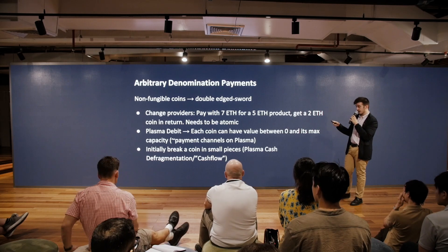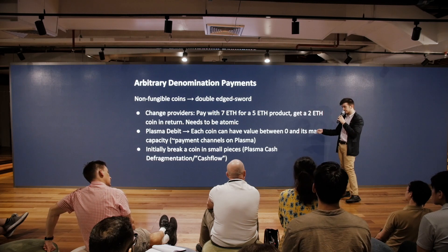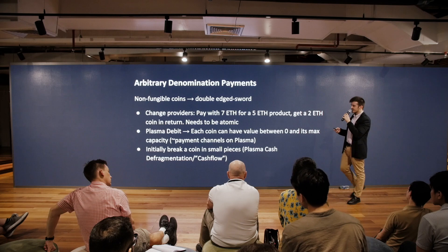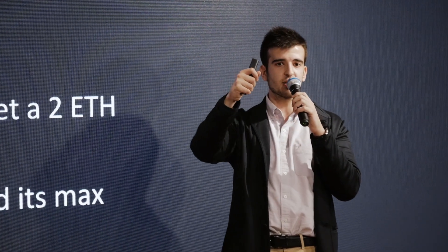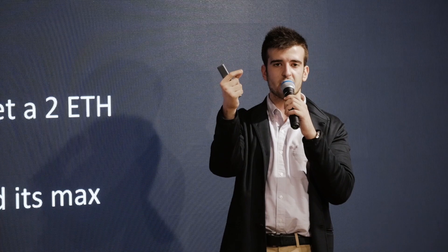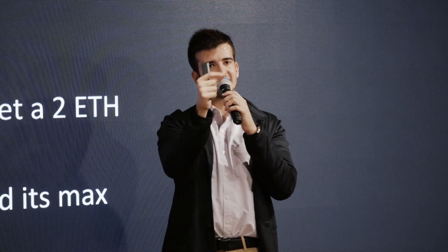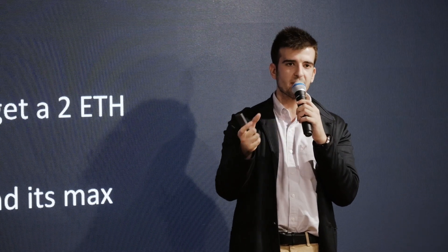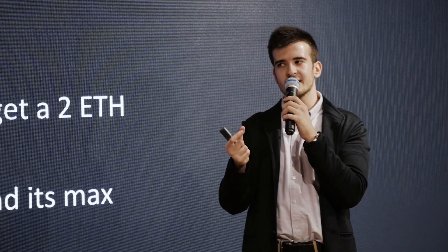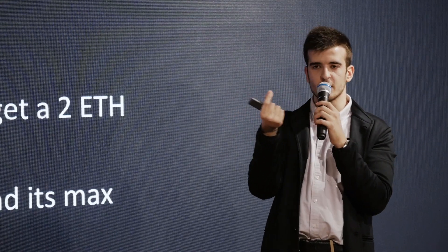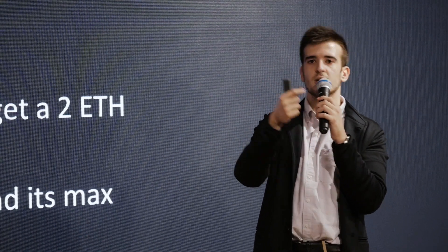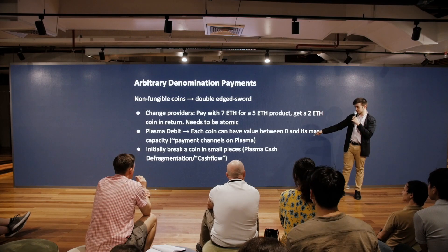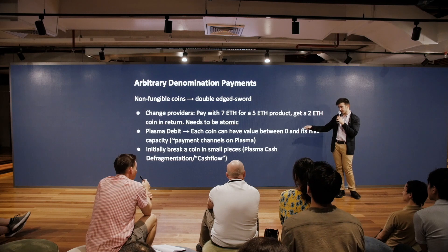The third approach is Plasma Prime (also called cash flow): when you deposit one ether, instead of getting one five-ether coin you get 100 coins of 0.01 ether each, enabling arbitrary denomination transactions down to 0.01 ether granularity. Multiple challenges with this approach are currently being worked on.